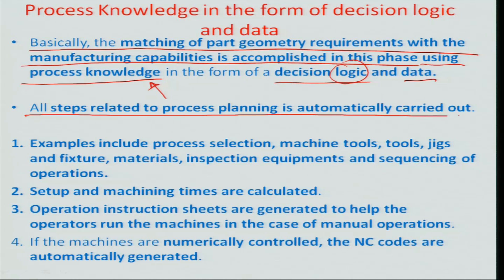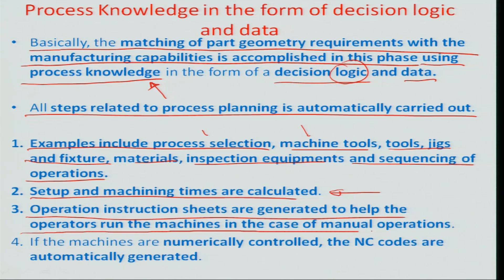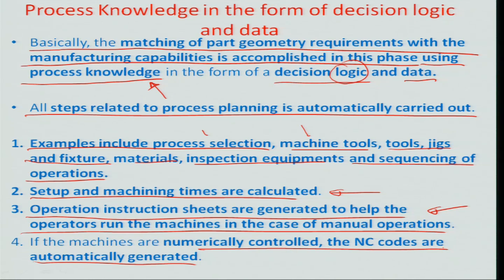All steps related to process planning are automatically carried out. These include process selection, machine tool selection, tools/jigs/fixtures selection, material selection, inspection equipment selection, and sequencing of operations. Setup and machining times are automatically calculated once these selections are made, and operation instruction sheets are generated for the operator in manual systems. In automatic NC systems, the data flows through the NC programming route into the CAM, and the CAM center controls machining on the NC system.